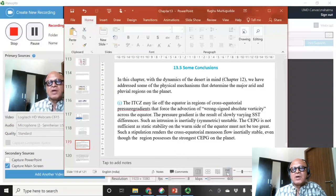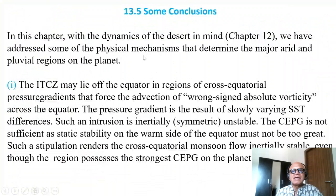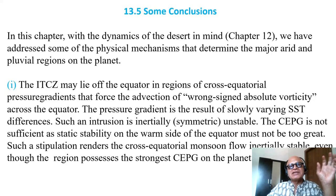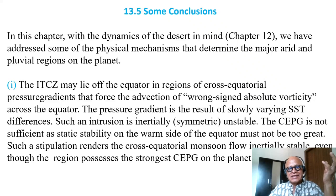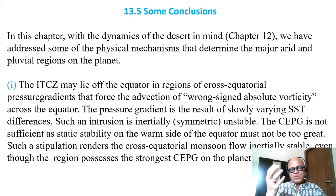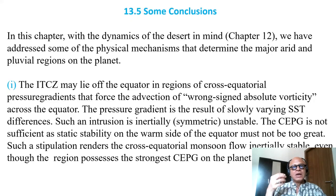Let's wrap up with some concluding thoughts on the dynamics of the desert. In the previous chapter, we addressed some of the physical mechanisms that determine the major arid and pluvial regions on the planet. Deserts are heated greatly and have a heat low — we talked about the Arabian heat low and the lateral exhaust. Other deserts also have lows, and of course the rainy regions also have low pressure, since rain is associated with cyclonic circulation and low pressure, whereas the ocean's dry regions have high pressure.